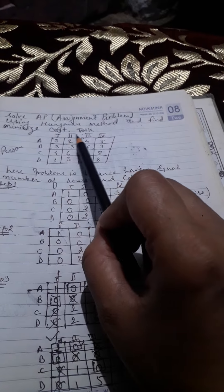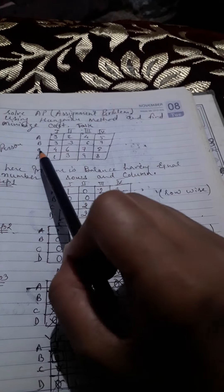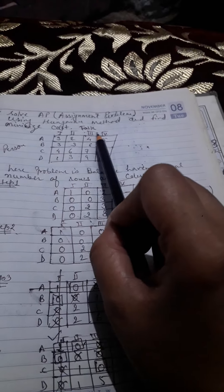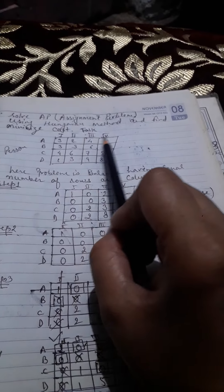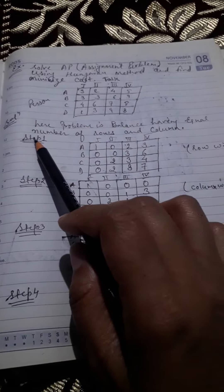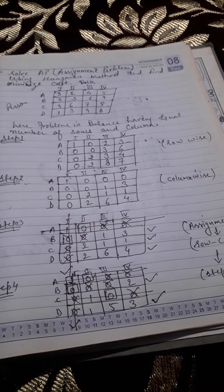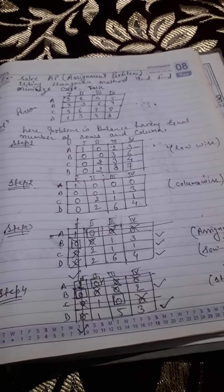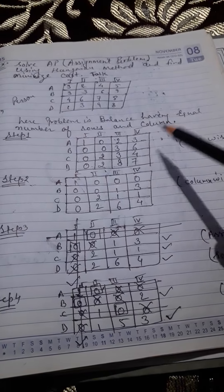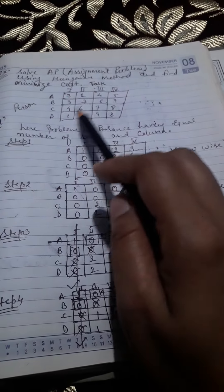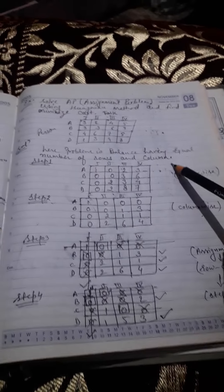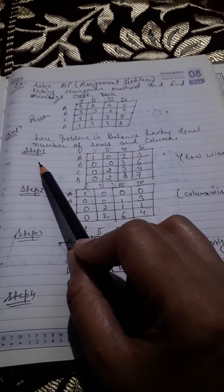A, B, C, D are the persons to be assigned to the first, second, third, and fourth tasks. The objective is to minimize the cost — we have to assign tasks to persons such that the total cost is minimum. First, we check whether the problem is balanced or not. Here the problem is balanced because we have an equal number of rows and columns — four rows and four columns.